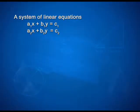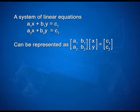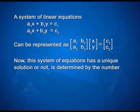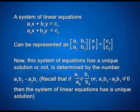A system of linear equations like a1x + b1y = c1, a2x + b2y = c2 can be represented as the matrix equation [a1 b1; a2 b2] * [x; y] = [c1; c2]. This system of equations has a unique solution or not is determined by the number a1*b2 minus a2*b1. If a1/a2 is not equal to b1/b2, or equivalently a1*b2 minus a2*b1 is not equal to 0, then the system of linear equations has a unique solution.